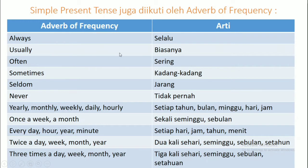Adverbs of frequency: always (selalu), usually (biasanya), often (sering), sometimes (kadang-kadang), seldom (jarang), never (tidak pernah). Juga kata keterangan waktu: yearly (setiap tahun), monthly (setiap bulan), weekly (setiap minggu), daily (setiap hari), hourly (setiap jam). Every day, every hour, every year, every minute — setiap hari, setiap jam, setiap tahun, setiap menit. Once a week (sekali seminggu), once a month (sekali sebulan).